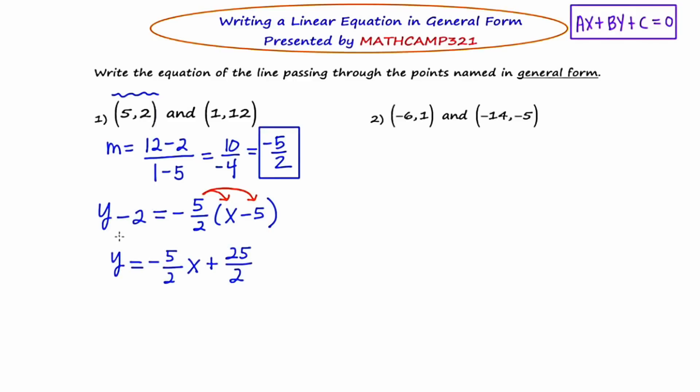Now you may be wondering what happened to this minus 2 here and I haven't dealt with that yet. I want to move this minus 2 to the other side, which means I have to add 2. But instead of thinking about it as adding 2, I'm going to think about it as adding 4 halves. The reason I do that is because it plays most nicely with the 25 halves that's already there. It's going to be much easier for me to combine those fractions. So now I'm going to do that and say that I have Y equals negative 5 halves X plus 29 halves.